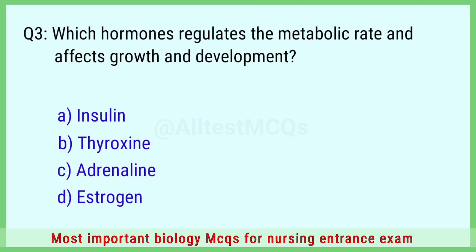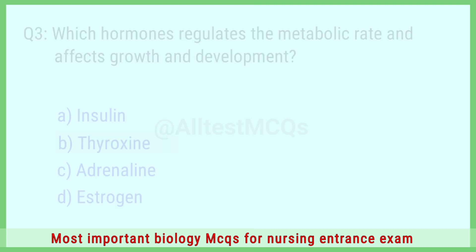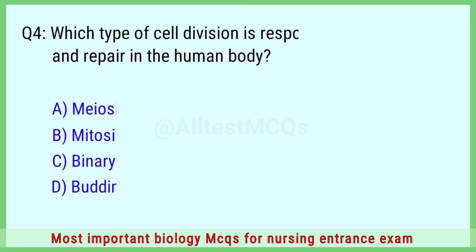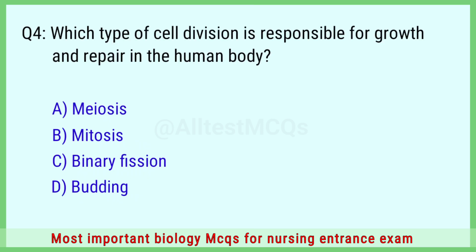Question number 3: Which hormone regulates the metabolic rate and affects growth and development? The right answer is option B: thyroxine.